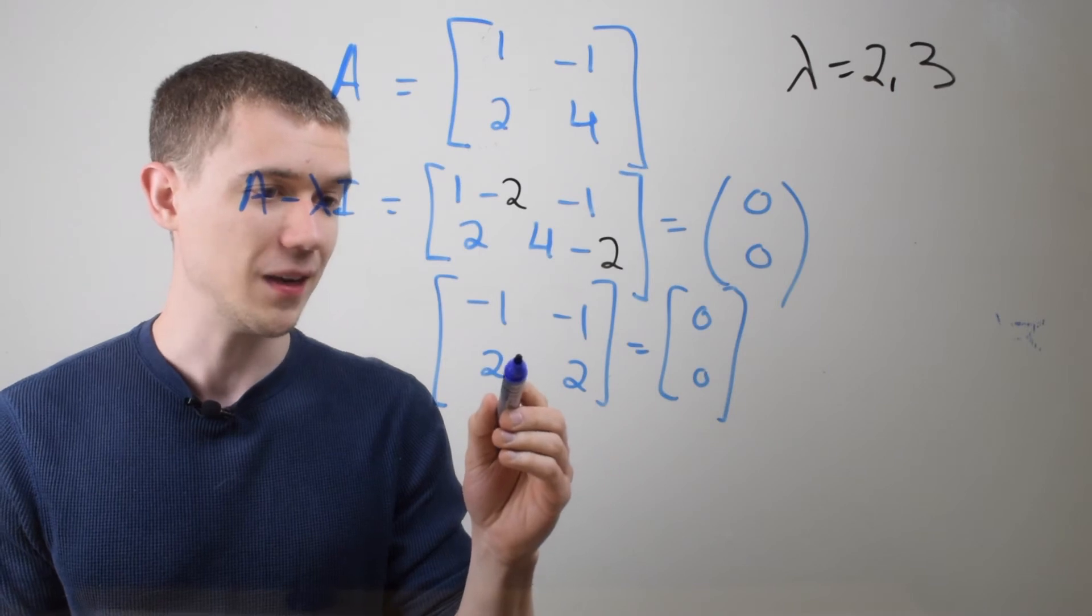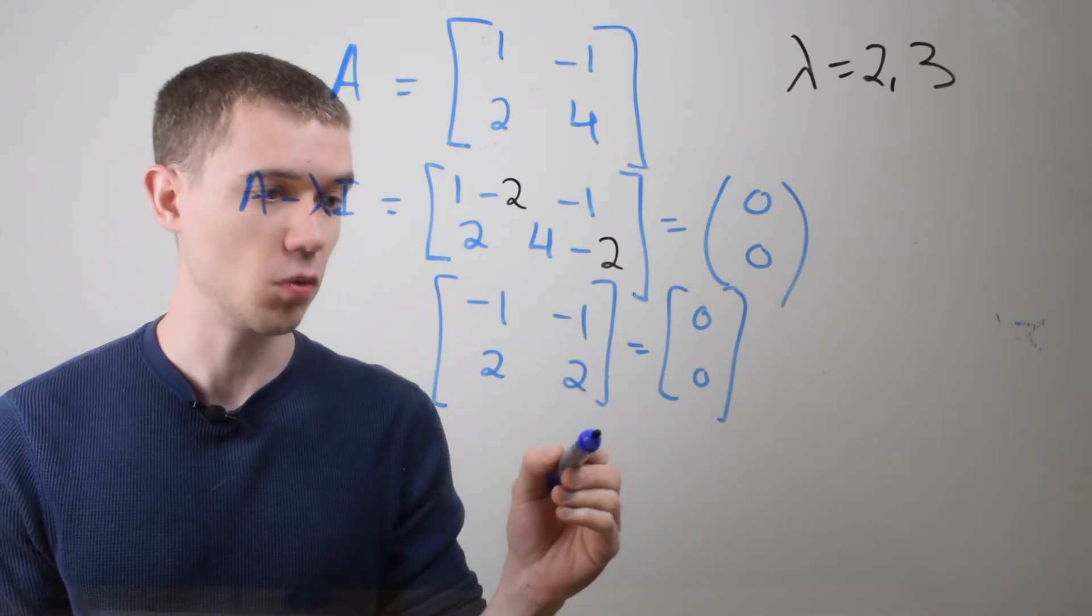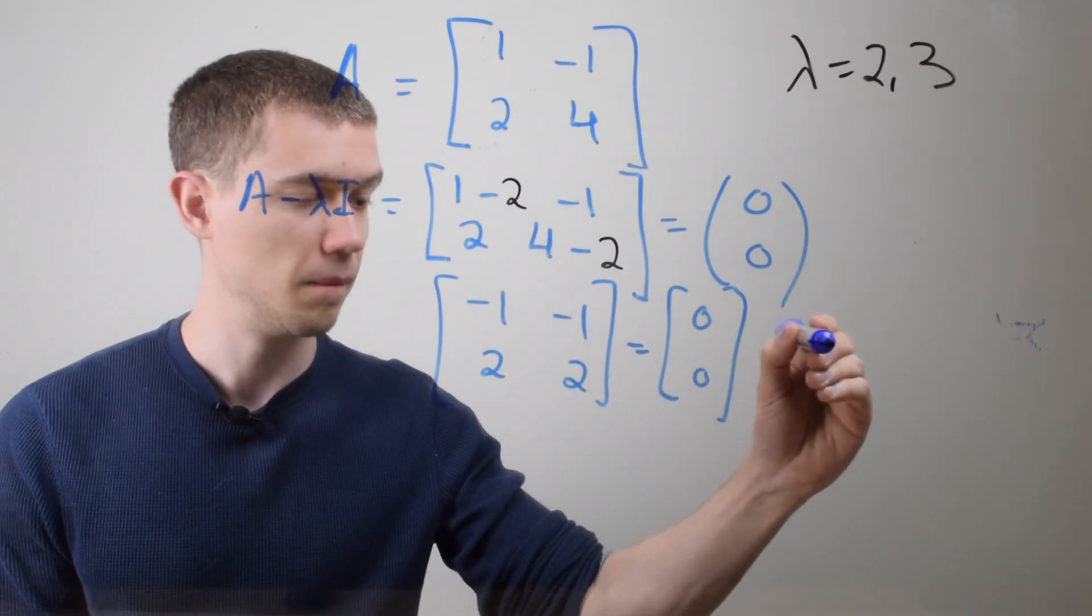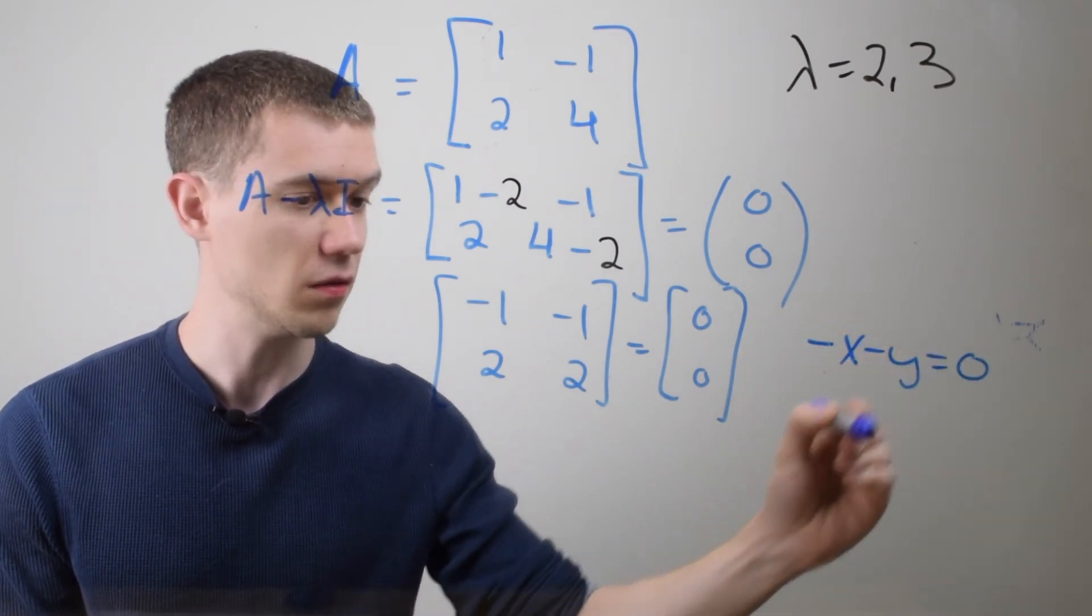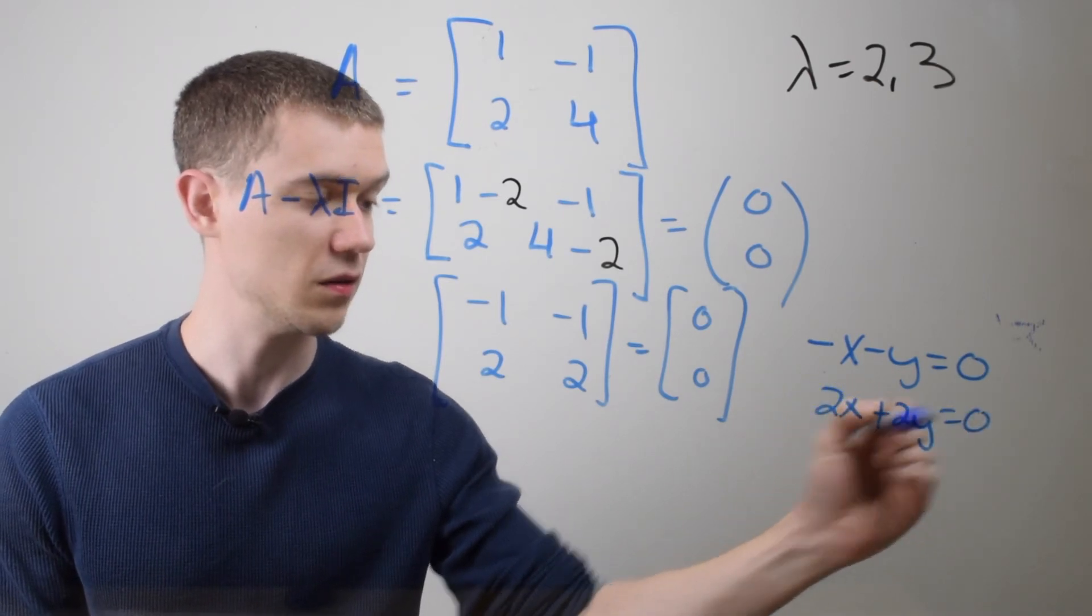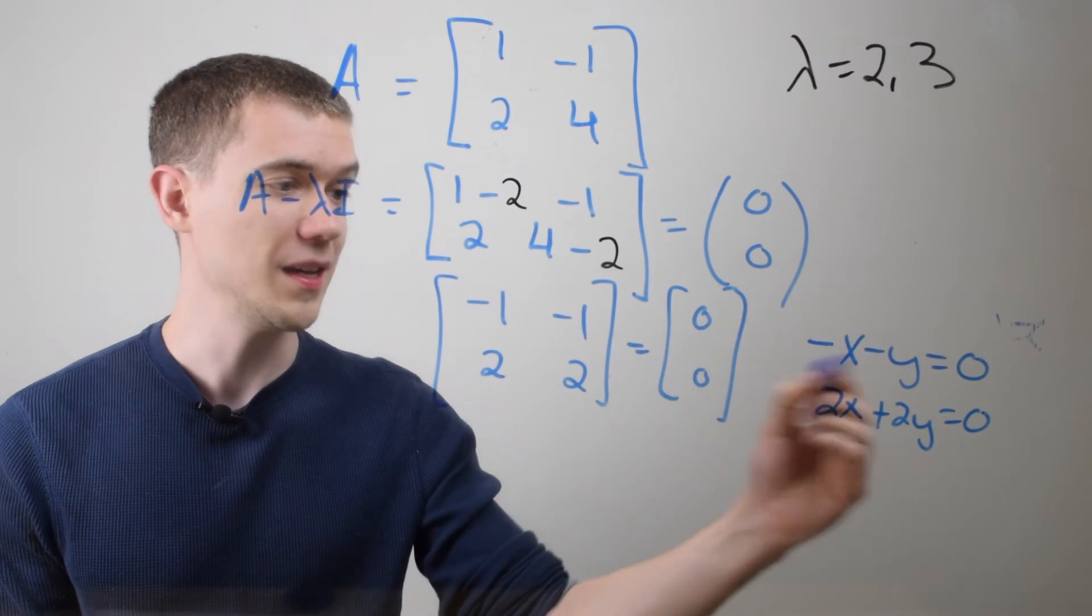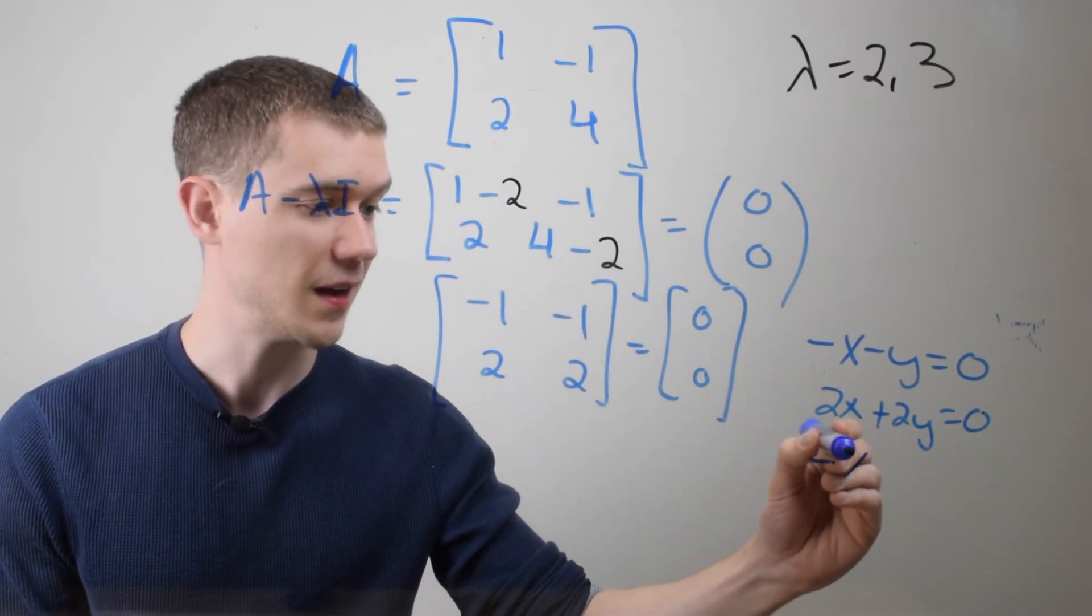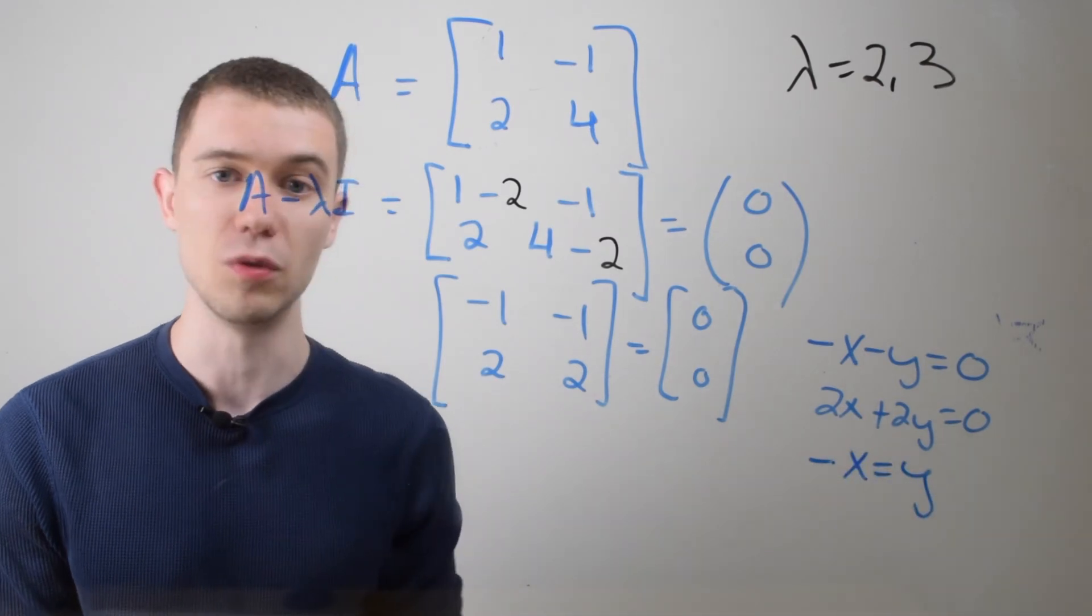If I write this in equation form, I'm getting that -x - y is equal to zero. And also 2x + 2y is equal to zero. And you can use either of these equations, but you're going to get the same thing that -x is always equal to y.